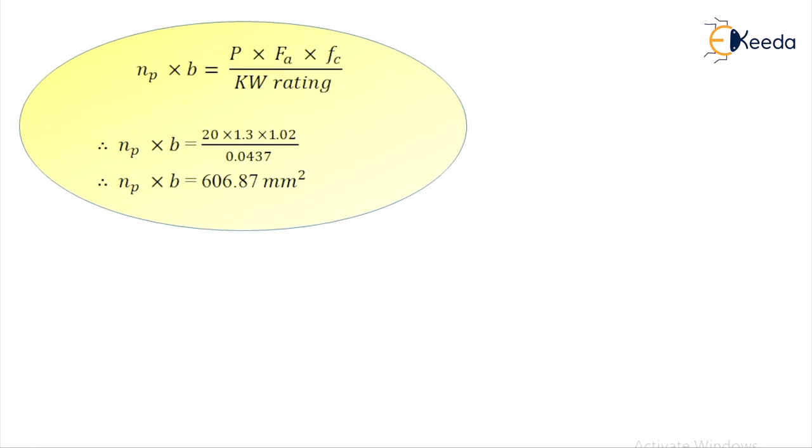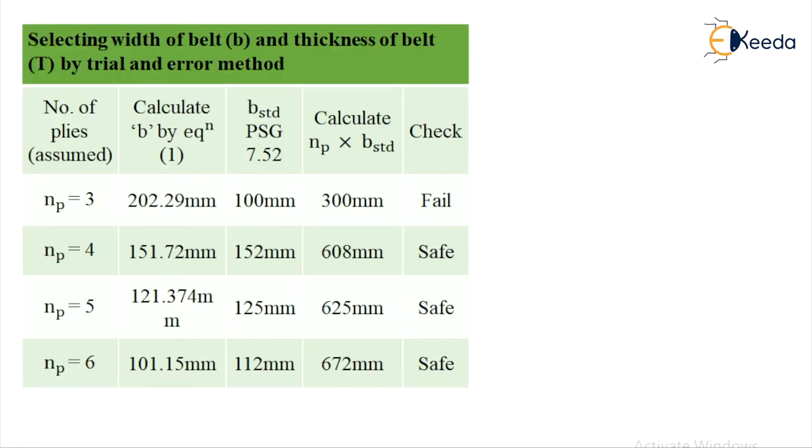That gives me the answer for NP into B as 606.87 mm square. Let us name the earlier equation as equation number 1.